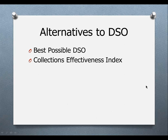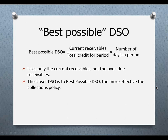There are two alternatives suggested for days sales outstanding. One is the best possible days sales outstanding, and the other is the Collection Effectiveness Index. The best possible DSO looks like the standard measure, but instead of using total receivables, we use only the current portion — those that are 30 days or less in age if credit terms are net 30. The goal is to get your DSO close to the best possible DSO, which means you have a more effective collections policy.